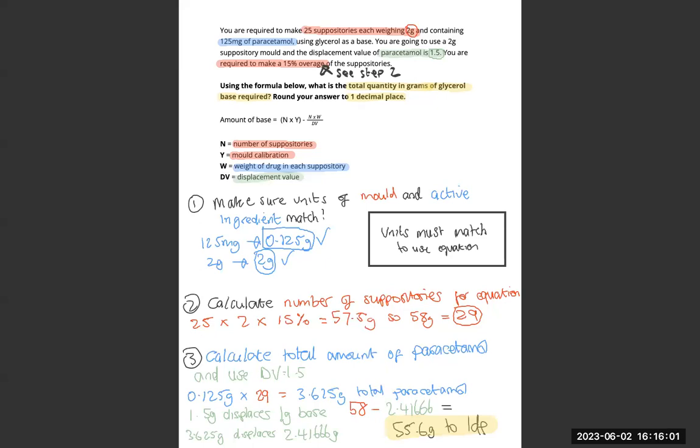Get the total amount of paracetamol in grams and then we use the displacement value which is 1.5. So this means that 1.5g of paracetamol will displace 1g of base.